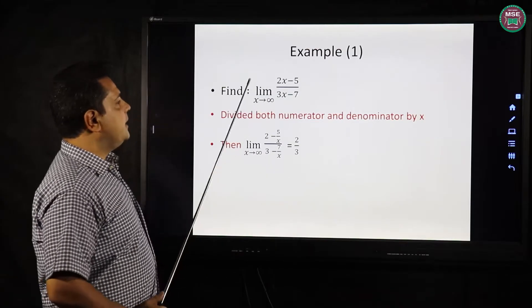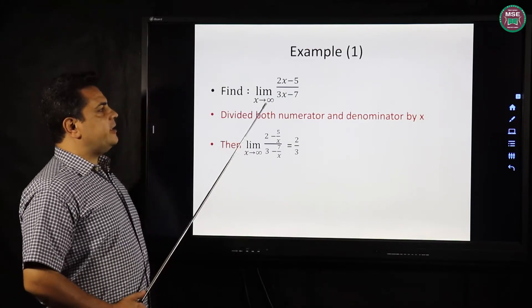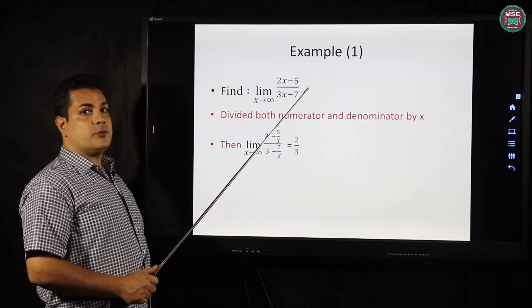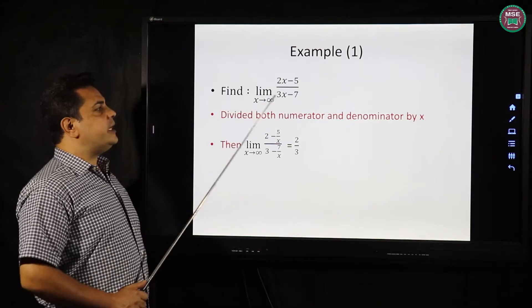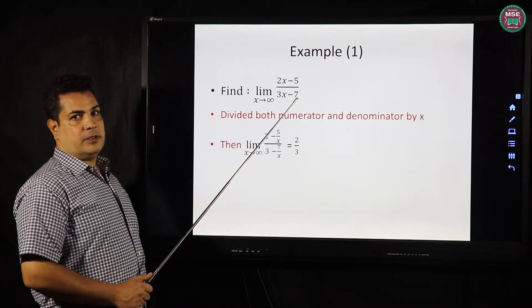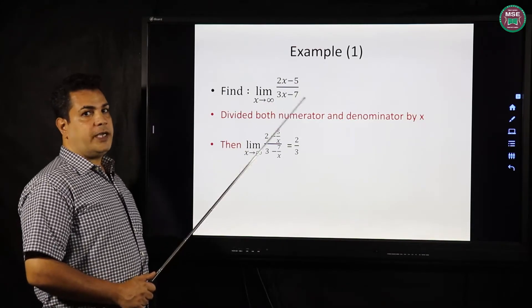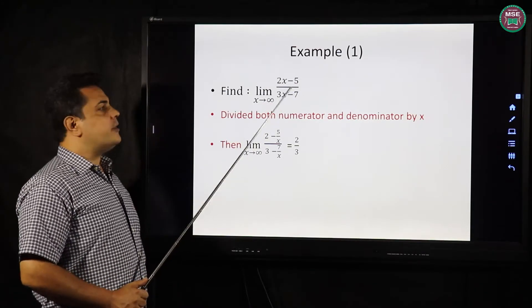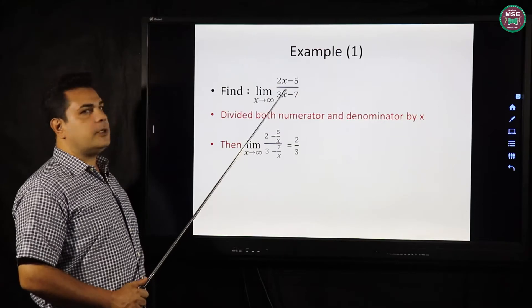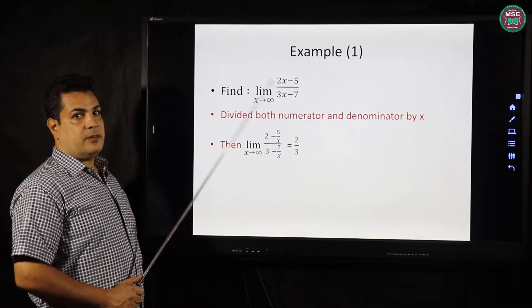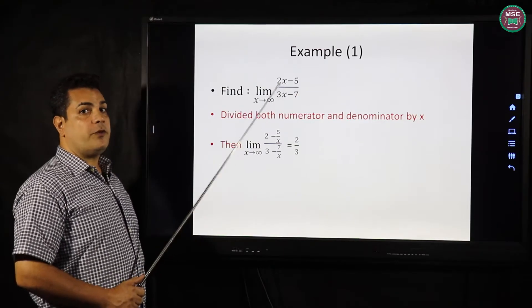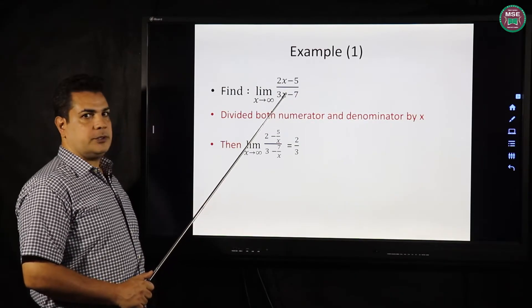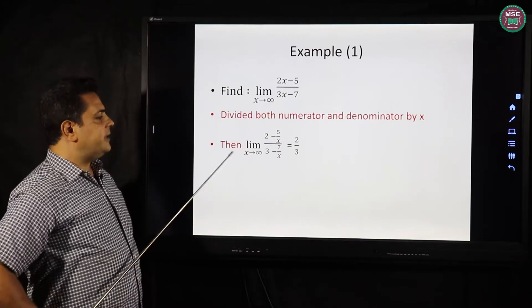Number one. Limit x tends to infinity of 2x minus 5 over 3x minus 7. We divide up and down by the greatest power of x in the denominator. The greatest power of x here is x, so we divide by x.